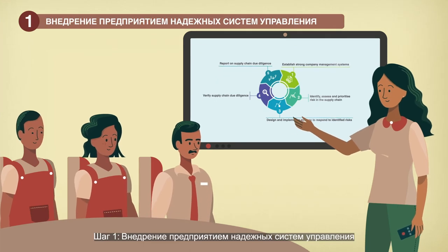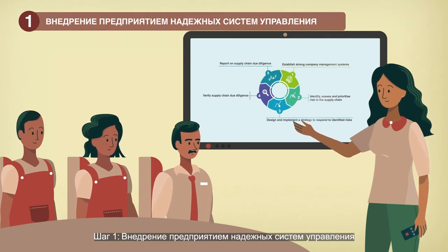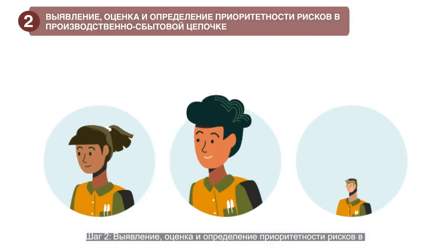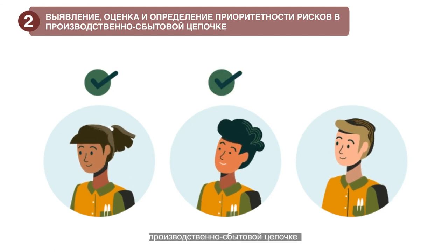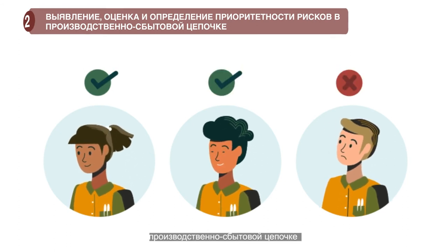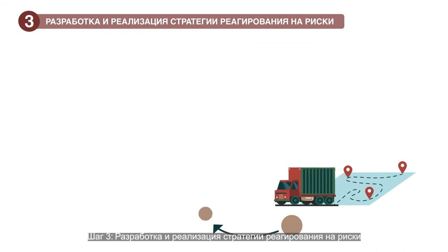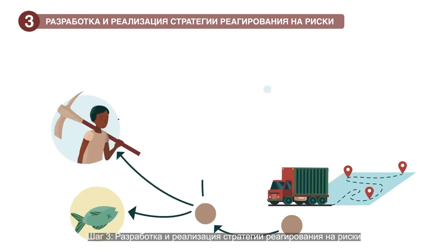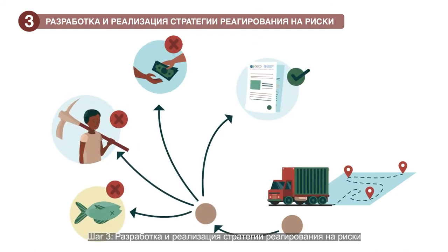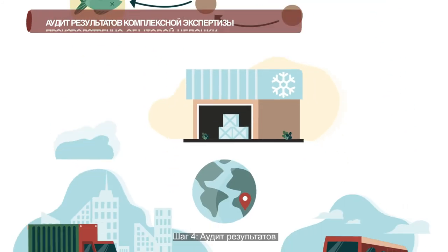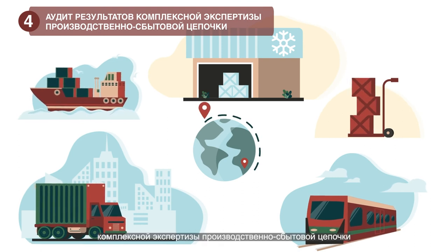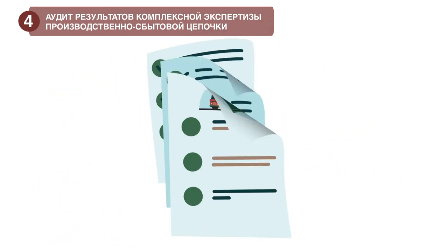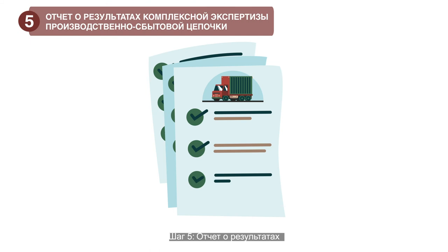Step 1: Establish strong company management systems. Step 2: Identify, assess and prioritise risks in supply chains. Step 3: Design and implement a strategy to respond to risks. Step 4: Verify supply chain due diligence. Step 5: Report on supply chain due diligence.